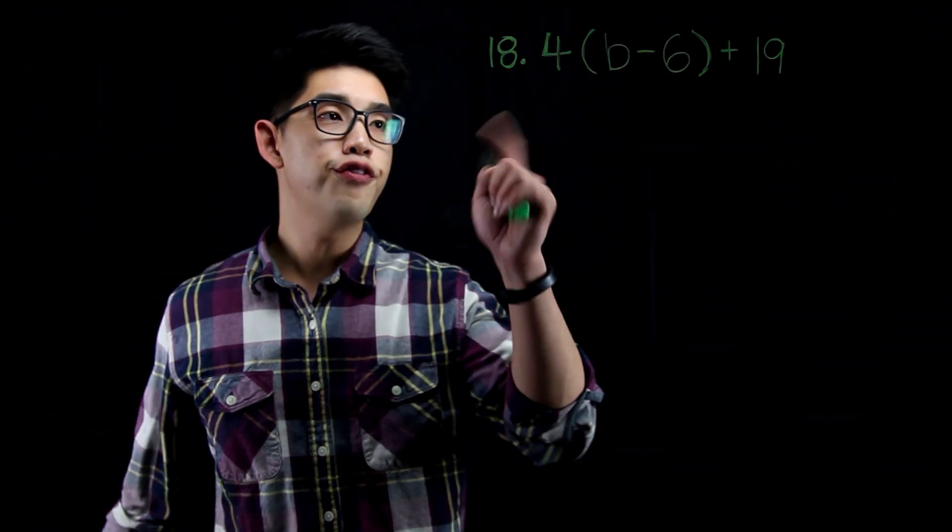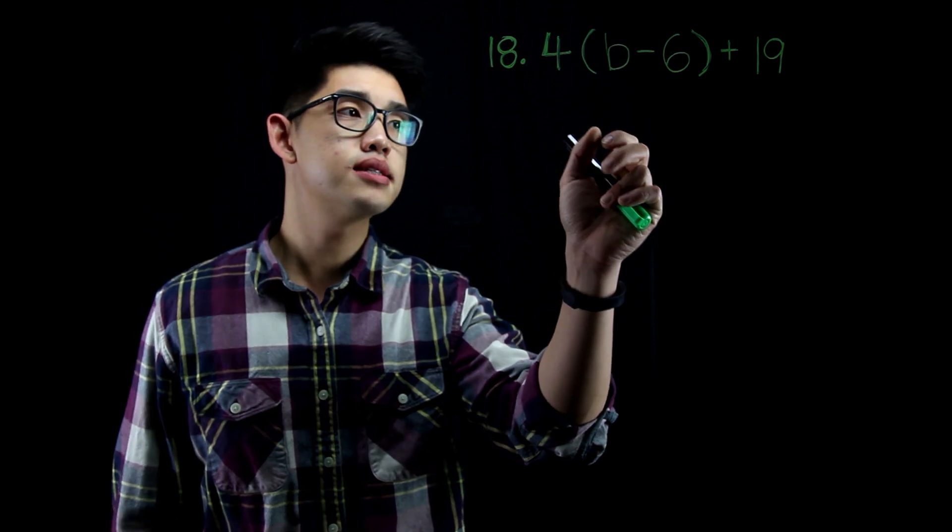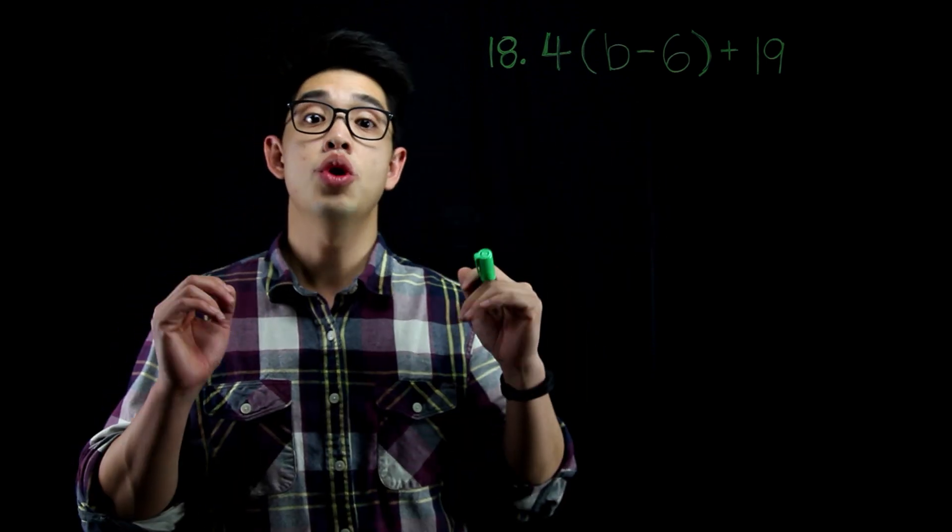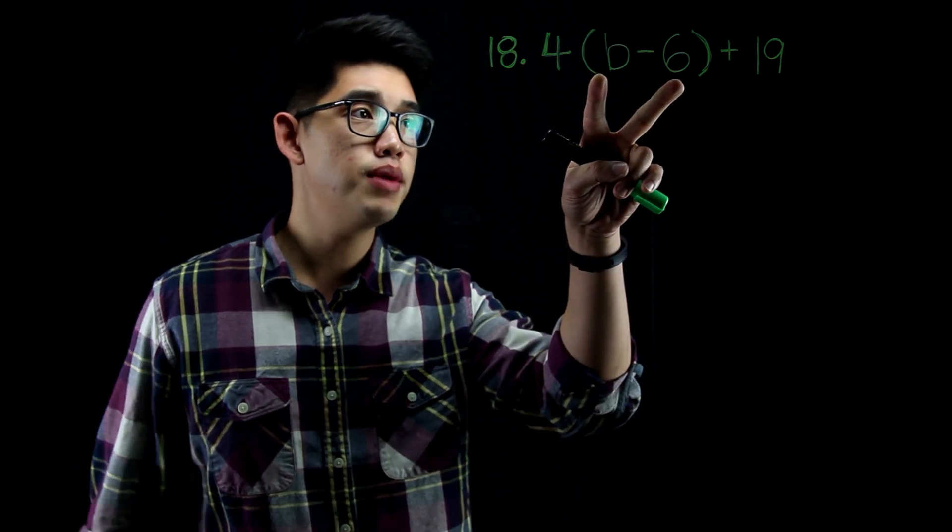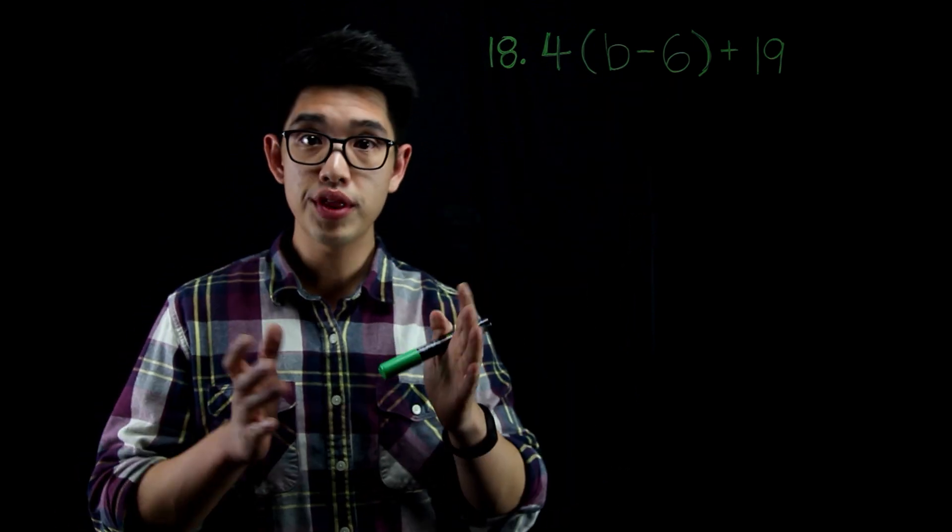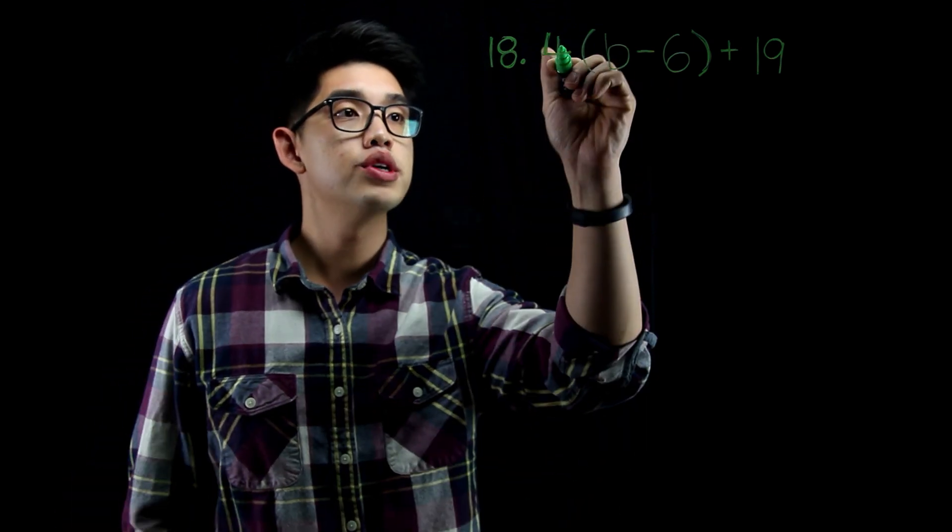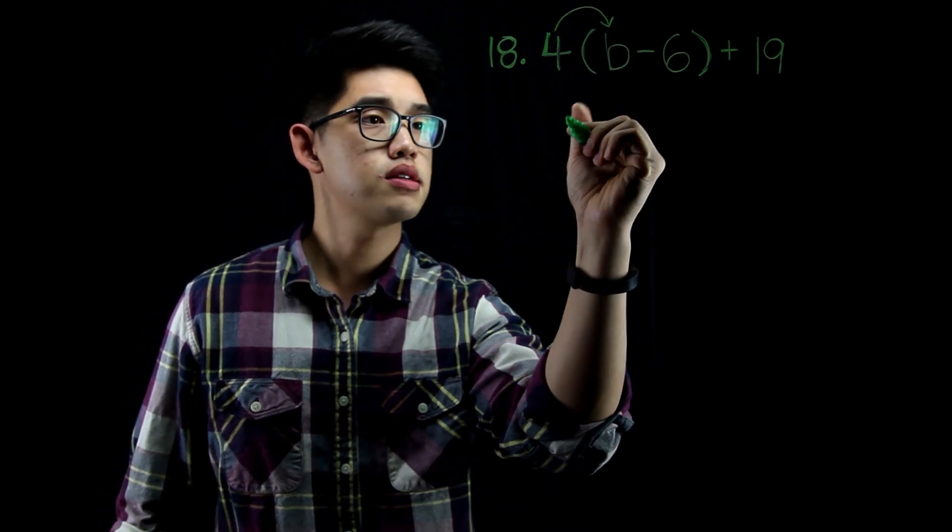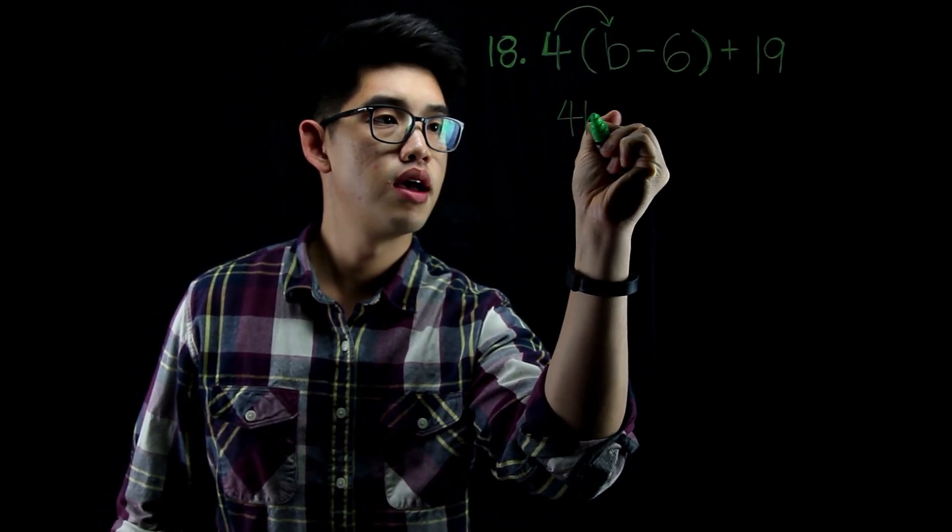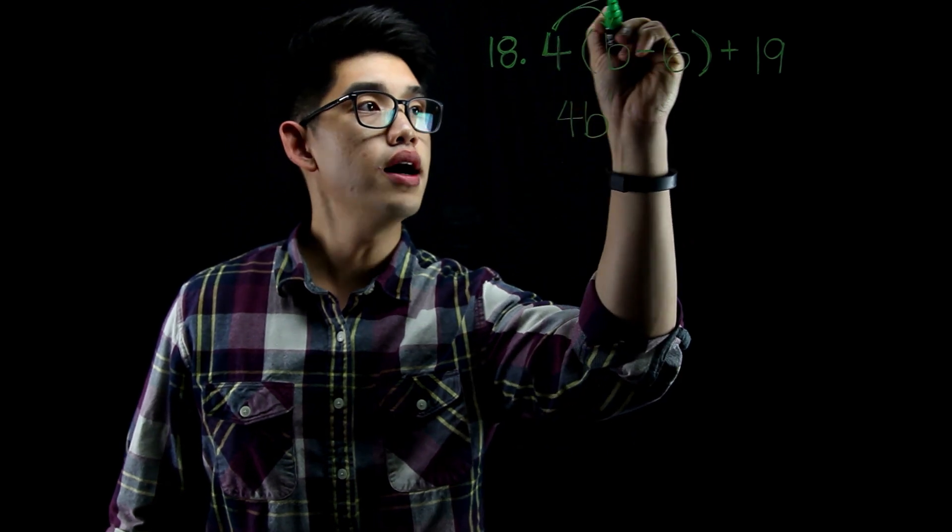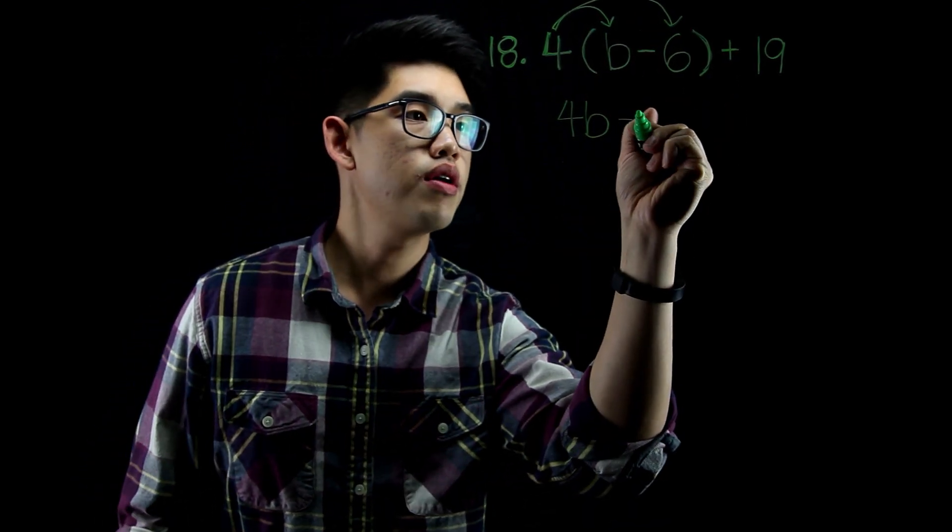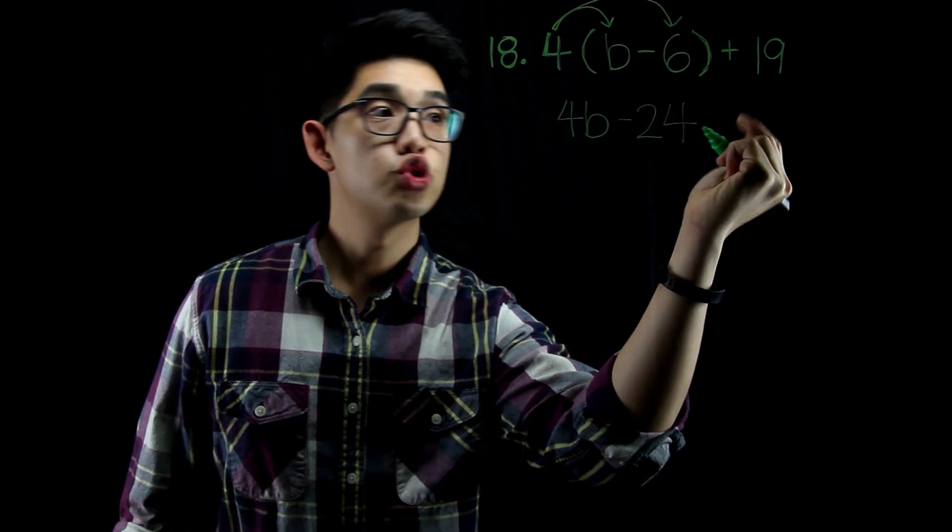For number 18, you have 4 times the quantity b minus 6 and then you're going to add 19 to it. First thing you're going to do is you're going to distribute. That's right, you have b minus 6, but you have quadruple that. That means times 4. I'm going to multiply 4 times b or distribute 4 to b. That's going to be 4b. And then 4 times negative 6. That's going to be negative 24.